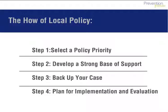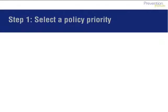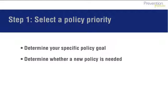Now that we've covered why local policy is so valuable, let's do an overview of how to do local policy. Here are four key steps, each with a number of sub-steps. First, select a policy priority. There must be a specific goal, and if this goal is not being met, investigate whether a new policy is necessary, or if an existing one simply needs to be enforced or needs tweaking.